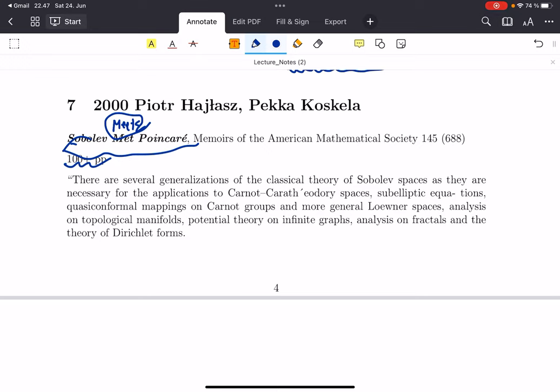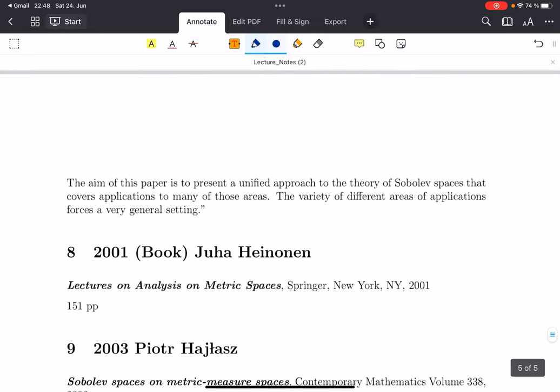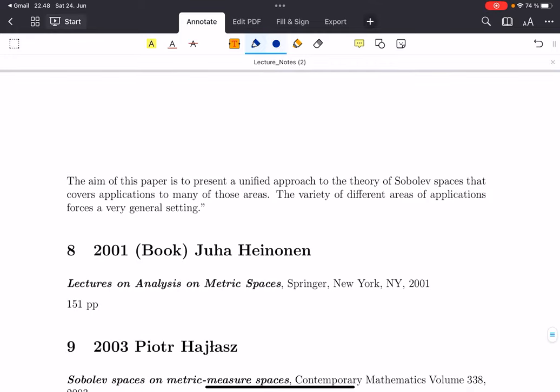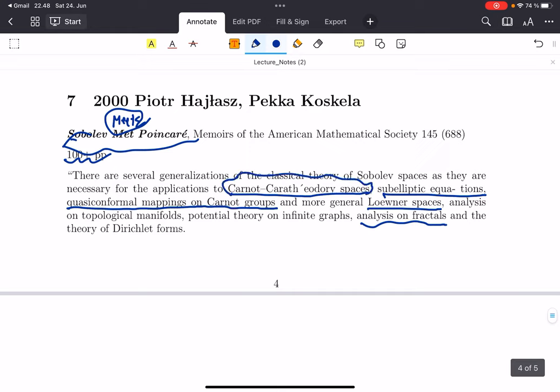One thing about this paper that I like is it actually talks about the applications to PDEs and many other areas. For example, Carnot-Carathéodory spaces, subelliptic equations—that's what I meant by PDE—quasi-conformal mappings on Carnot groups, Loewner spaces introduced by Koskela and Heinonen and Koskela, and even analysis on fractals. After they compare and discuss different notions of Sobolev spaces, they extensively talk about their applications.